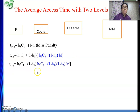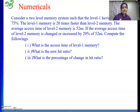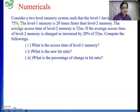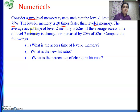If we simplify this we get a combined expression. We need to remember this because we need to solve numericals using two levels of caches. Next we will solve some problems. Consider a two-level memory system such that level 1 has a hit ratio of 75%. The level 1 memory is 20 times faster than level 2 memory. The average access time of level 2 memory is 52 nanoseconds.